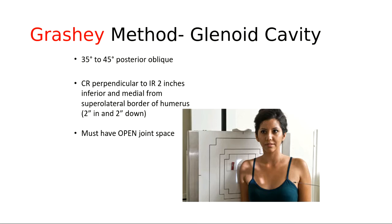For the Grashey method, the patient is placed into a 35 to 45 degree posterior oblique — either RPO or LPO. The patient is still shielded and the central ray is perpendicular to the IR. It is placed two inches below and two inches medial from the supralateral border of the humerus. So you find the top of the shoulder and go two inches in and two inches down, placing the CR at about the same location as for the internal and external, except now the patient is obliqued.